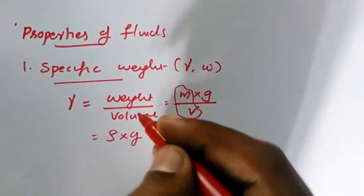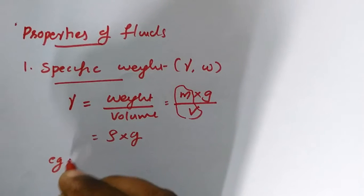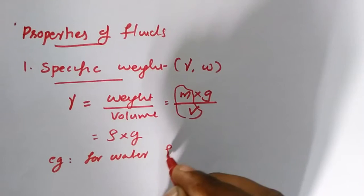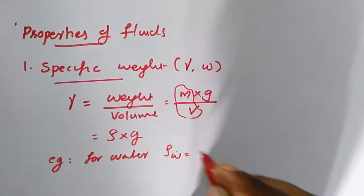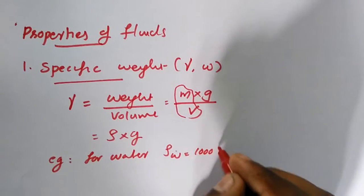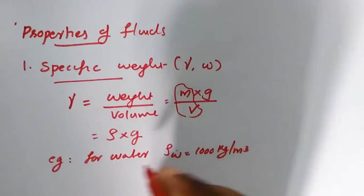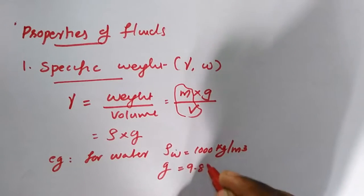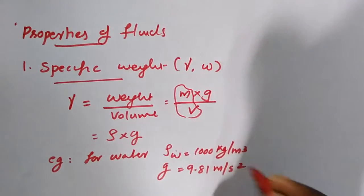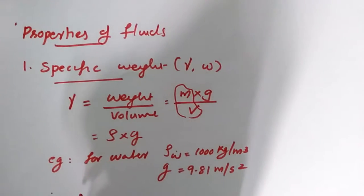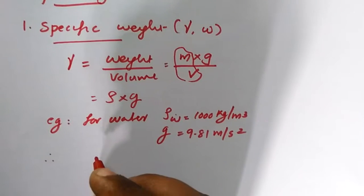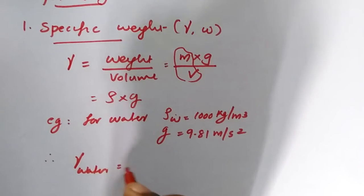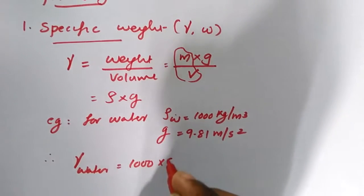For example, for water, the density of water is thousand kilogram per meter cube and g value, it is constant for us, it is nine point eight one meter per second square.